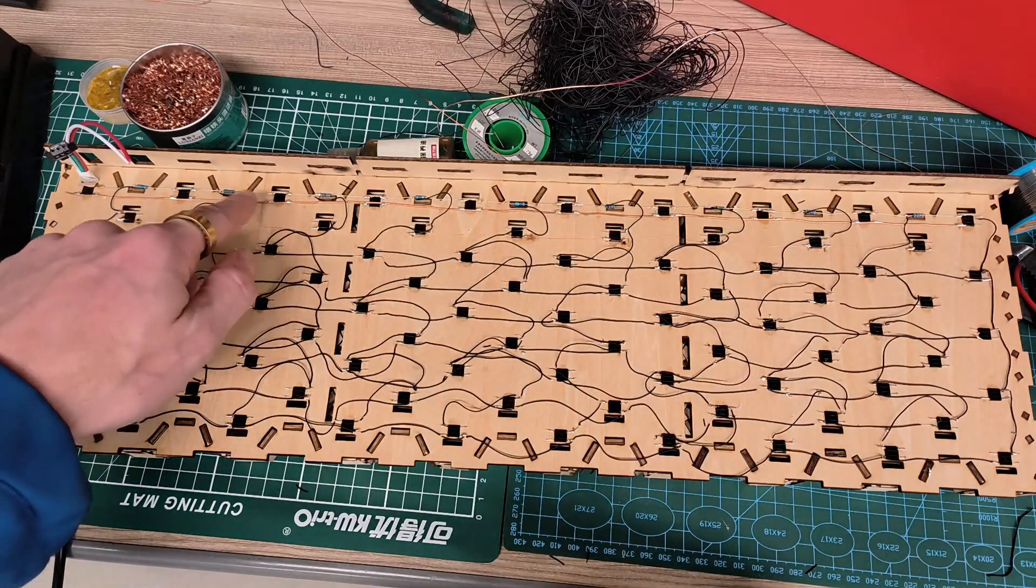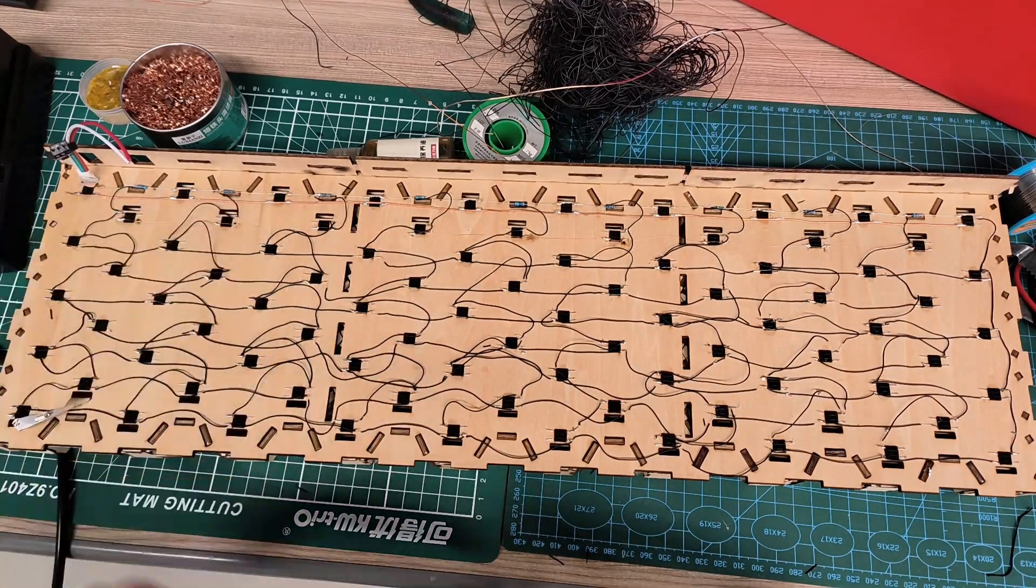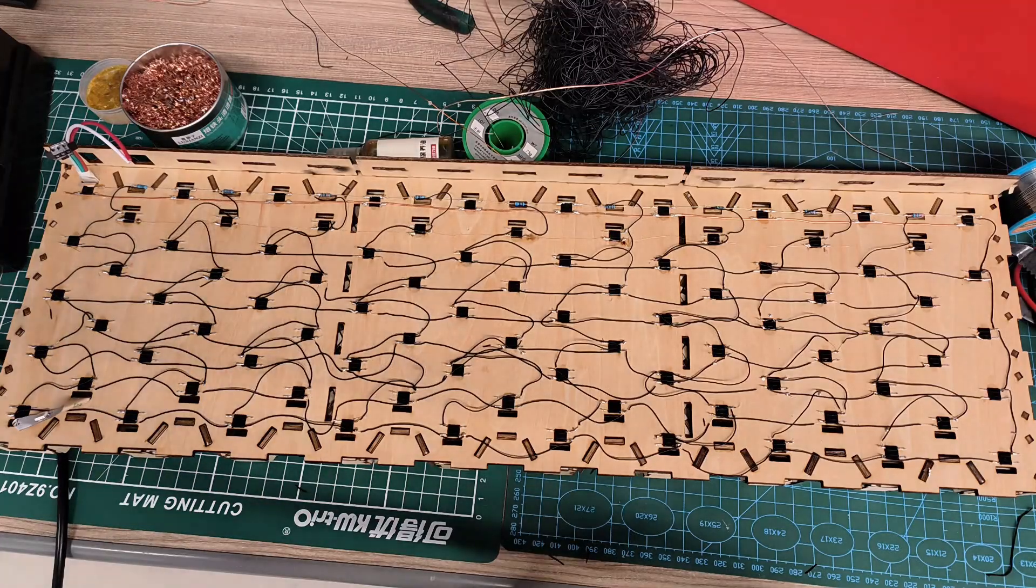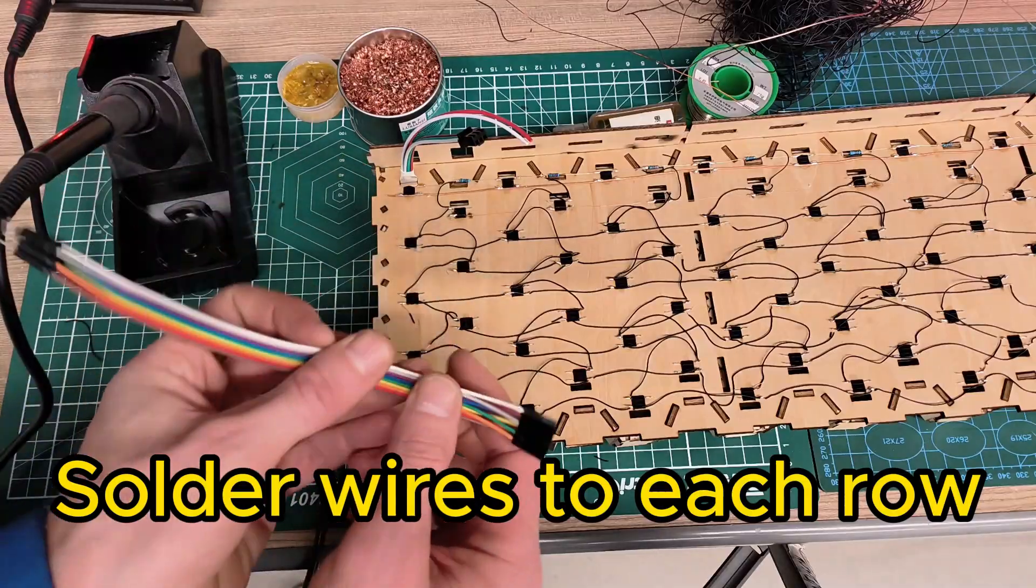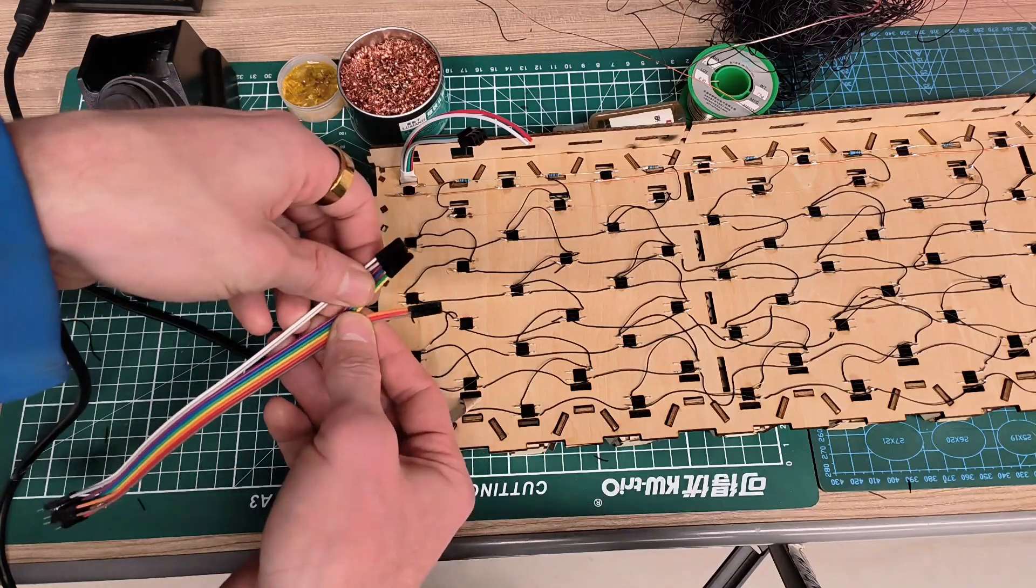This is what it should look like when you have the whole thing soldered together. Then what we have to do is add some solder wires to each row so that we can connect it to the Arduino.